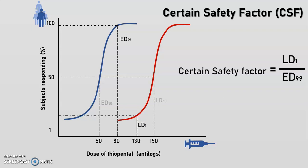From this graph, ED99 is 80 and LD1 is 130, so the certain safety factor is 130 divided by 80, which equals 1.625 — which is greater than 1. This clearly indicates that the dose effective in 99% of subjects is less than what would be lethal to 1% of subjects. If the certain safety factor is less than 1, it indicates the drug is unsafe for therapeutic use.